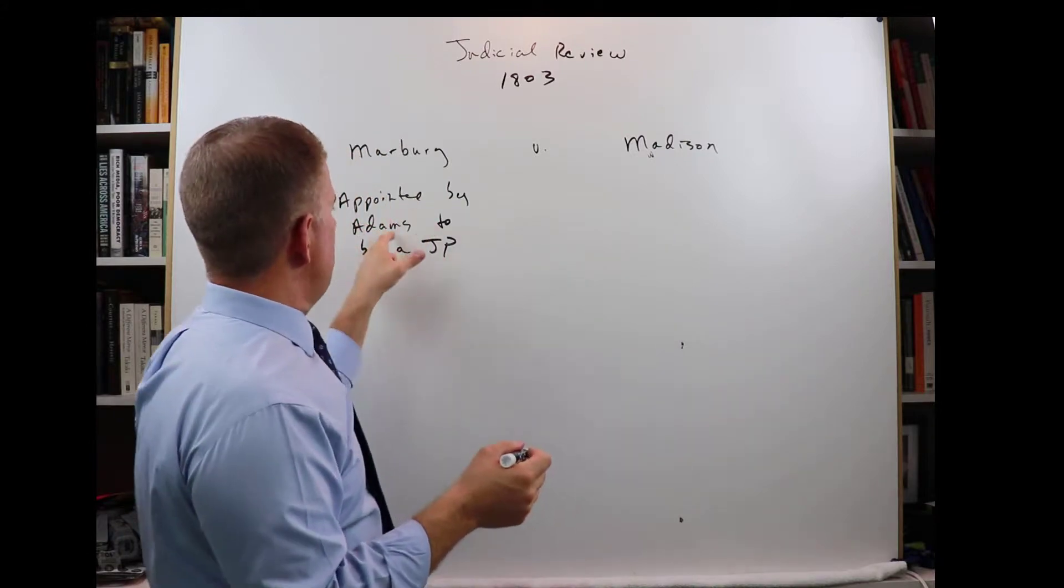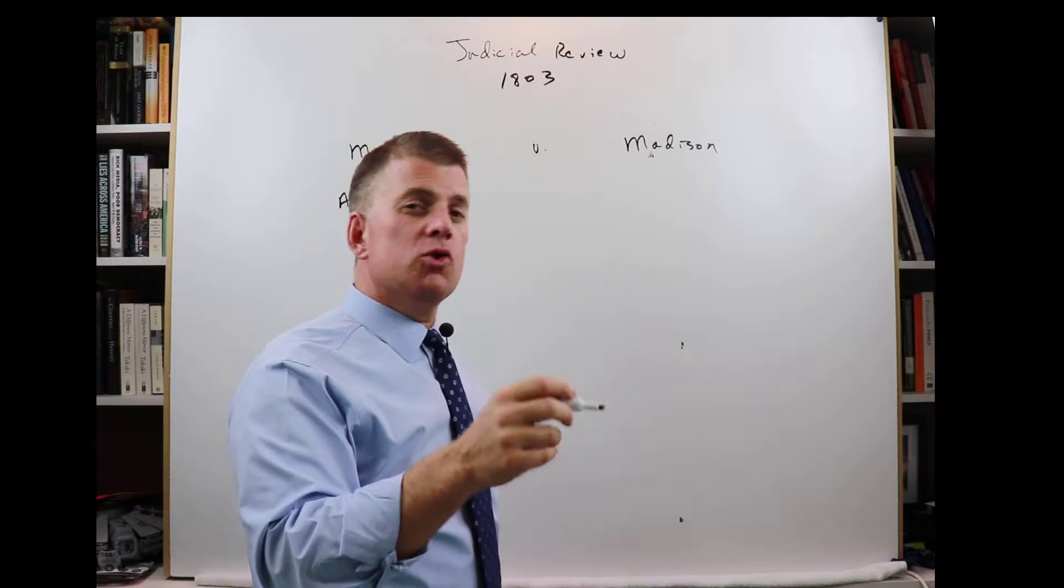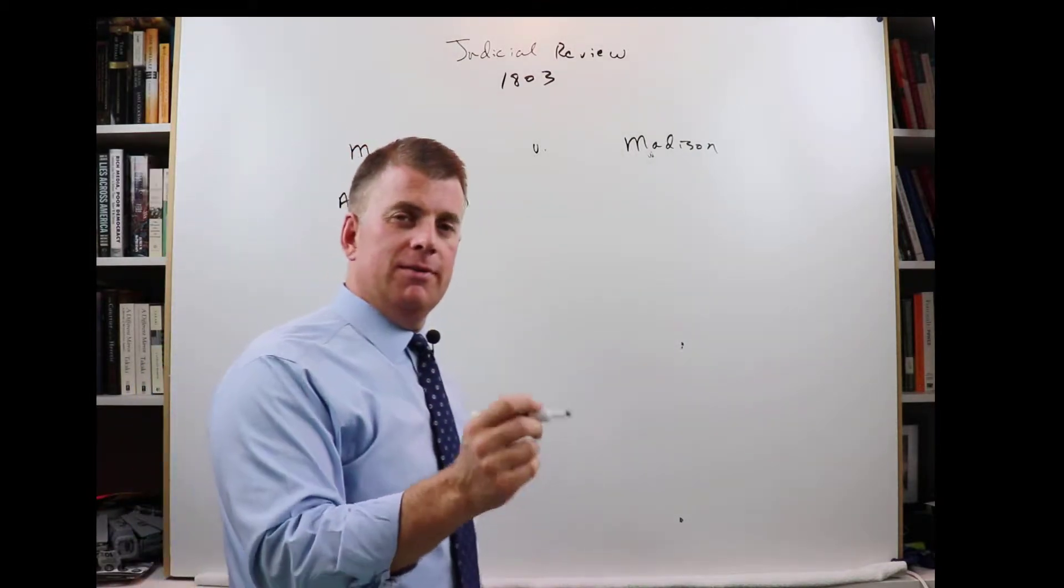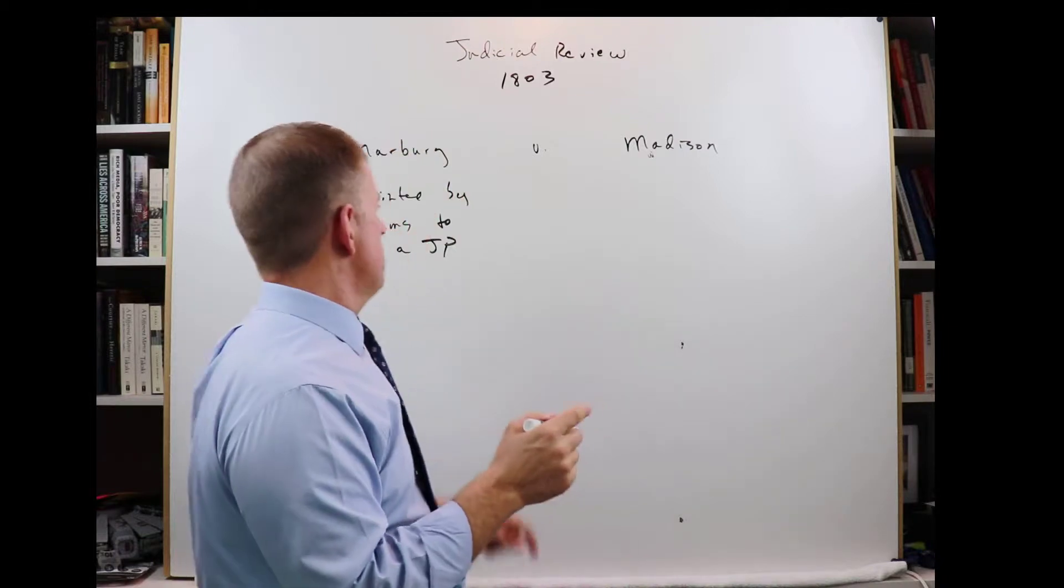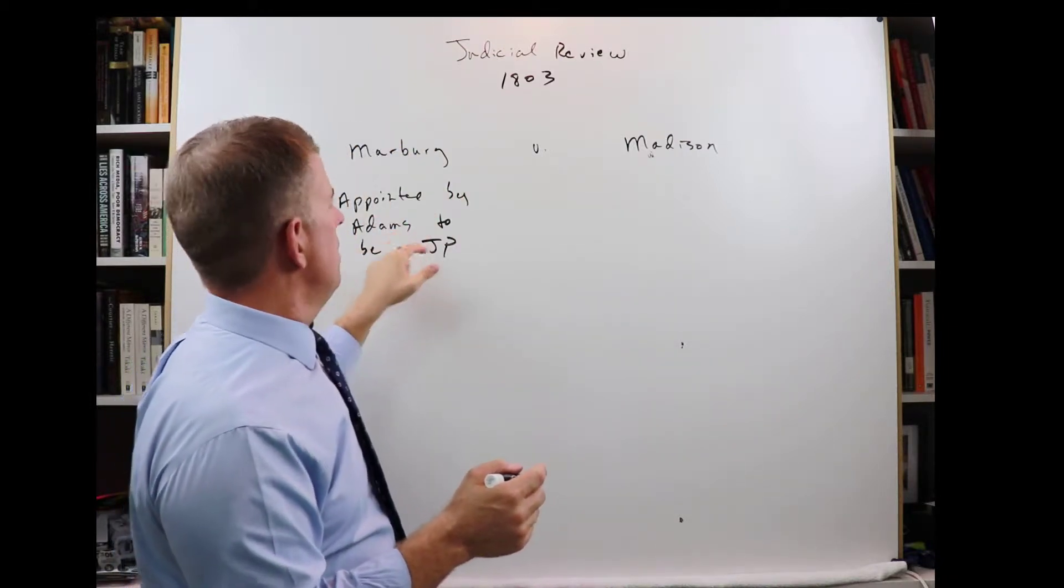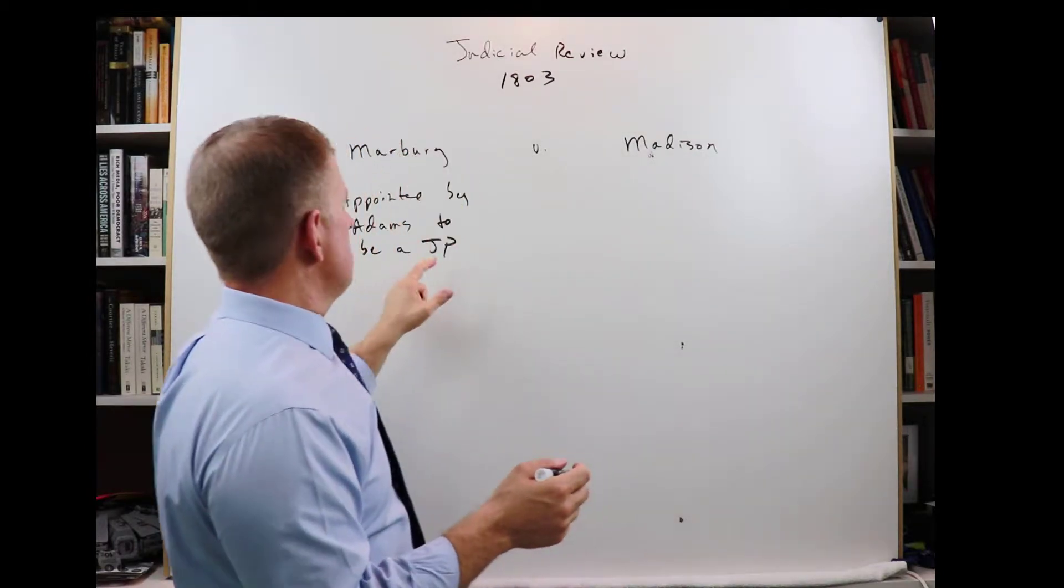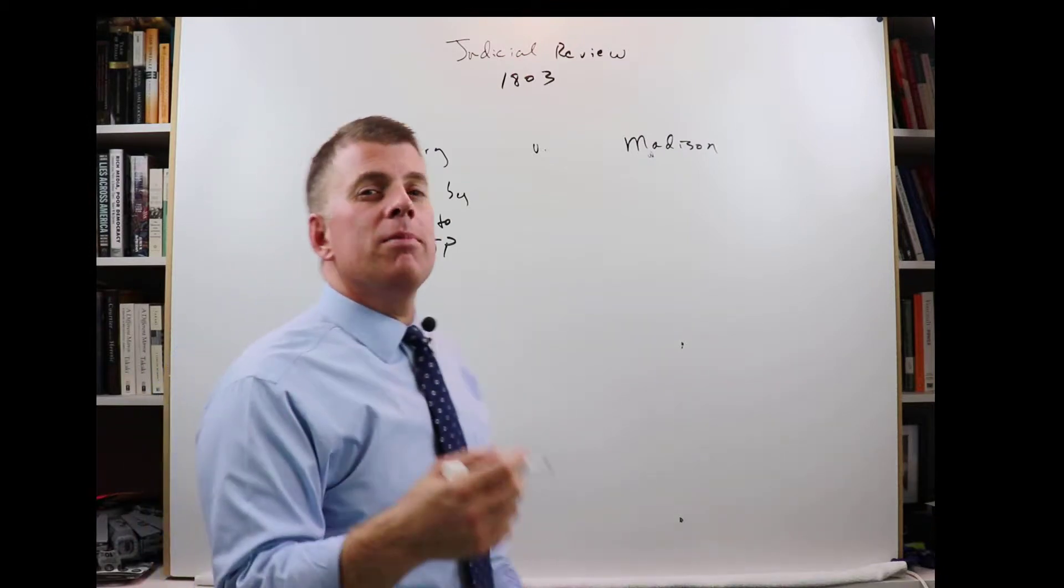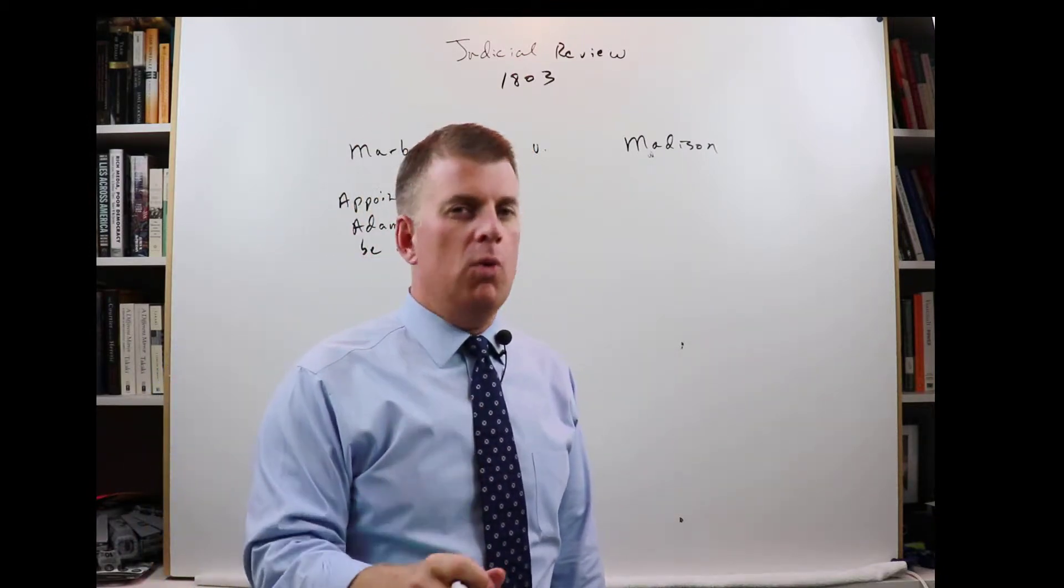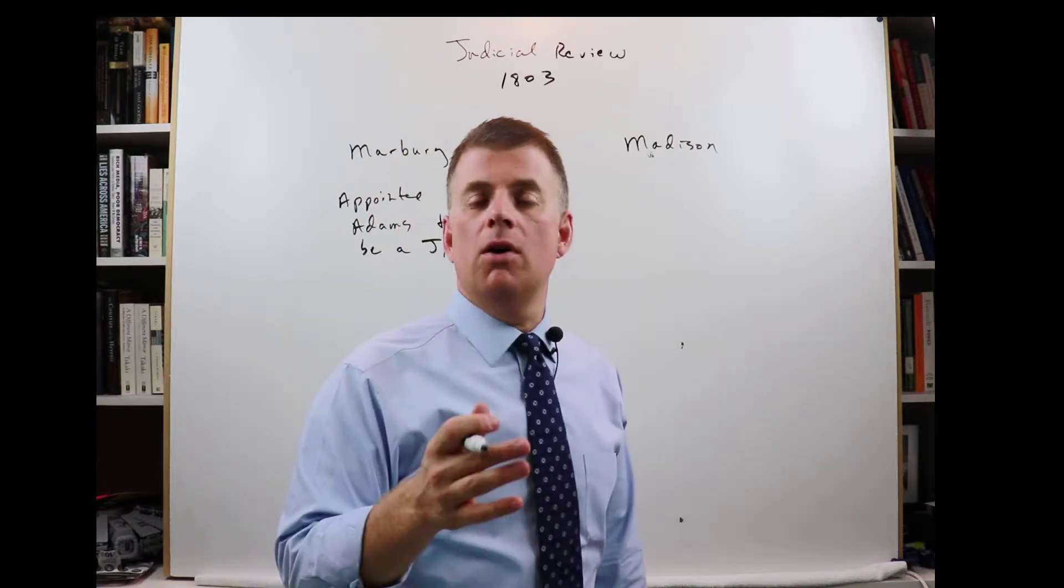Now this was right at the end of Adams' term. So if you remember, George Washington was president for two terms, then his vice president John Adams was president for one term, four years. And at the end of Adams' term, he appointed Marbury to be a justice of the peace. And this might have been the night before, the day before. It was right before he left office, right before Adams left office.